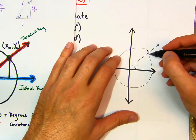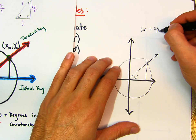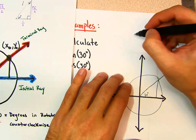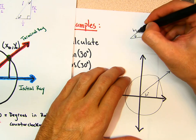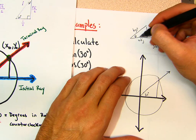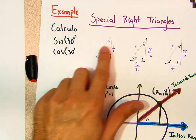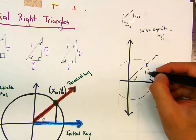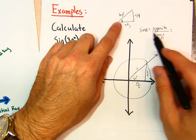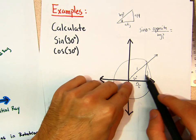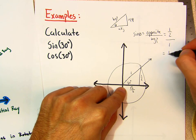If this is 30 degrees, remember sine equals opposite over hypotenuse. Drawing the triangle: theta is the degree of rotation, the hypotenuse goes to the circle, the opposite side is vertical, and the adjacent is horizontal. For a 30-degree rotation using the 30-60-90 triangle, the opposite is 1/2, the adjacent is √3/2, and the hypotenuse is 1.